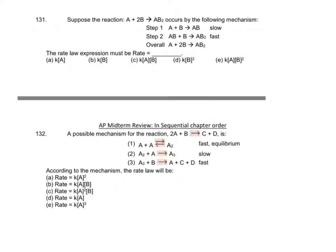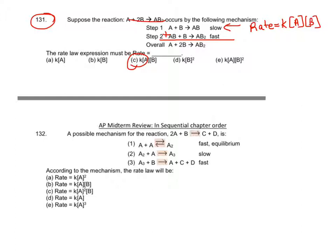Looking at question 131: they give you the overall reaction, and both steps should add up to it. They tell you which is the slow step. To find the rate law, I look at the slow step — it's an elementary reaction, so I use stoichiometry. Rate equals k times [A]^1 times [B]^1. That would be choice C. Notice that the stoichiometry of the entire reaction does not match the rate law because it's only governed by the slow step.